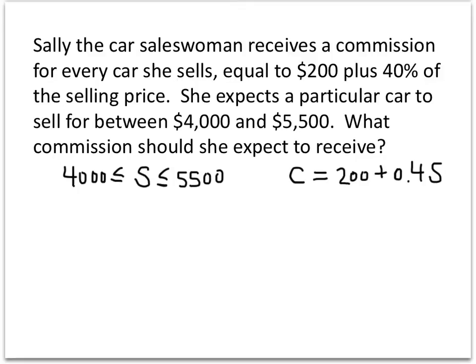What I want to know is what numbers the value of C — 200 plus 0.4S — falls between. I'm going to work backwards from the compound inequality for S, manipulating all three parts so that by the time I'm done, I'll have 200 plus 0.4S in the middle. Since multiplication happens before addition in order of operations, I'll multiply everything by 0.4 first.